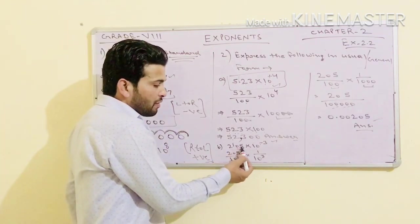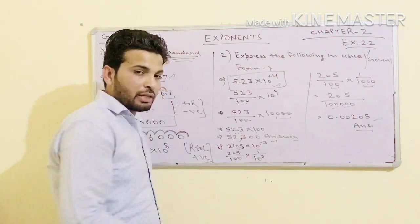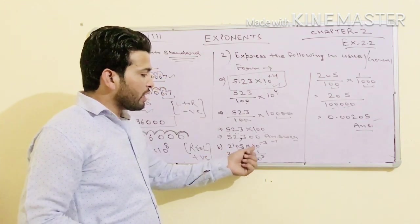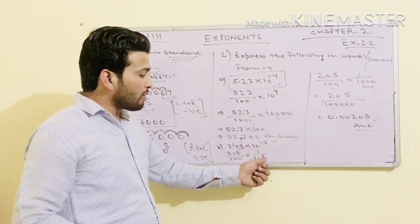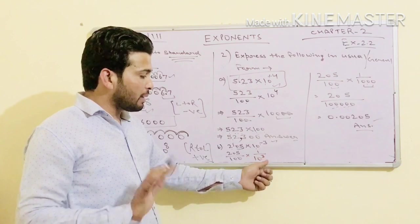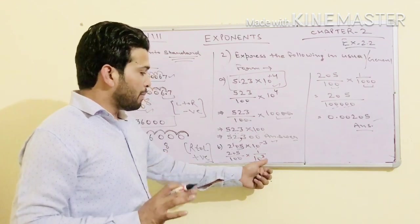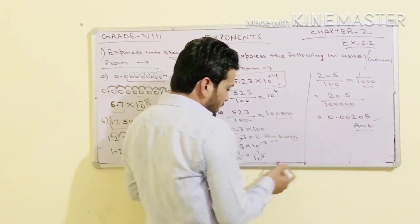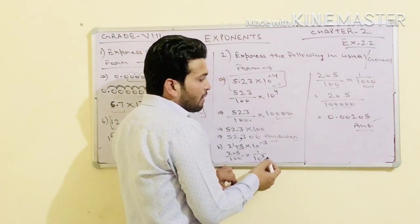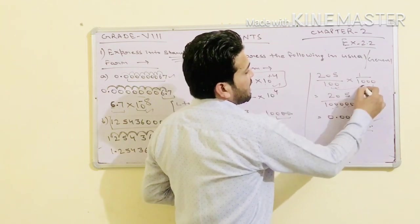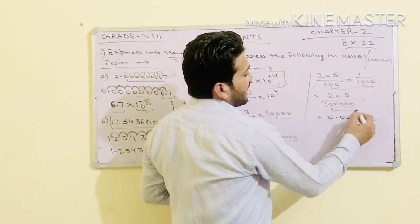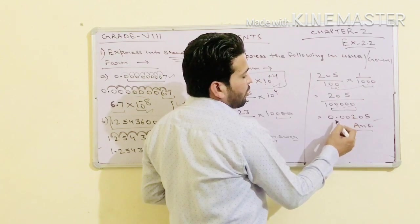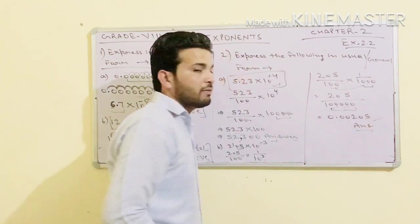So 2.05 × 10⁻³ equals 205 upon 100 × 1 upon 10³. Multiply the denominators: 100 × 1000 = 1 lakh. So the answer is 205 upon 1,00,000 = 0.00205. There are five places after the decimal point, so the answer is 0.00205.